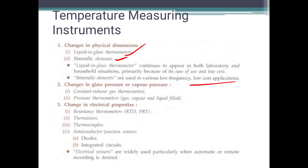The second classification is based on changes in gas pressure or vapor pressure. This includes the constant-volume gas thermometer, the pressure thermometer, vapor-filled, and liquid-filled types.